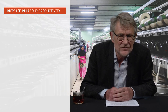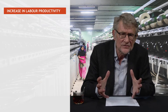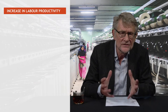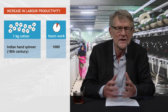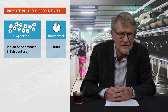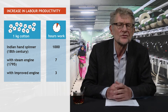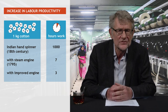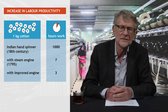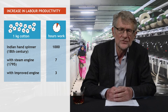The most direct consequence was an intended one: an ongoing growth of labor productivity, that is, of the production per working hour. For example, while an Indian hand spinner in the 18th century needed about 1,000 hours to spin one kilogram of cotton, this was reduced to three hours in 1820 with an advanced steam engine. All kinds of products became much cheaper in terms of the labor time needed to produce or buy them, and this went hand in hand with an overall increase of material prosperity.